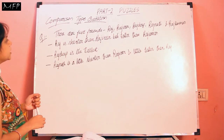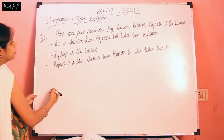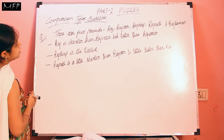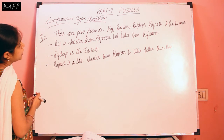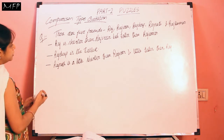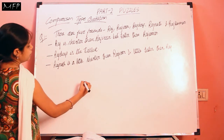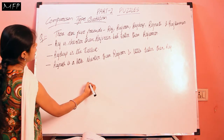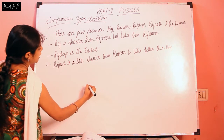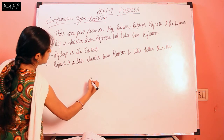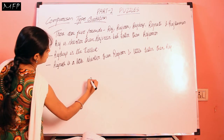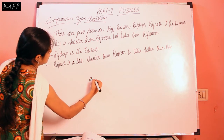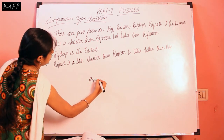So let us first arrange them. The first statement is: Raj is shorter than Rajveer but taller than Rajkumar. So here we will write — it is given that Raj is shorter than Rajveer. If we arrange in descending order, then Rajveer will come at the top.